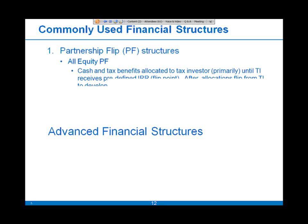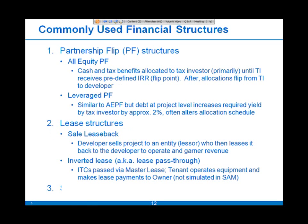There are essentially three generic types of financial structures referred to as advanced structure capabilities. The first is partnership flip structures, the second are lease structures, and the third is single owner balance sheet.